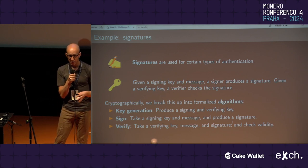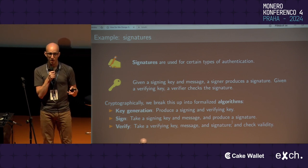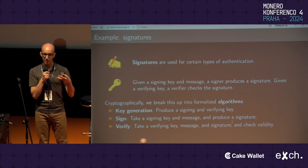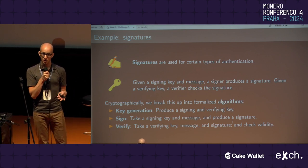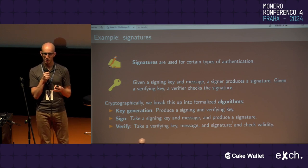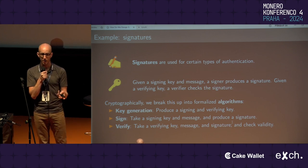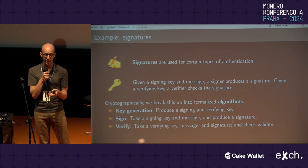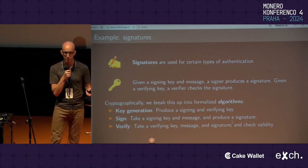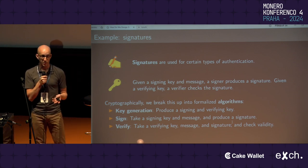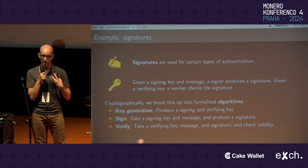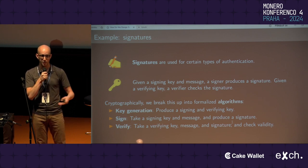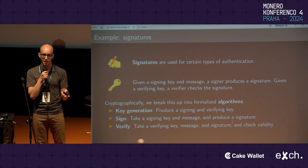To formally analyze the security of any signature scheme, we have to formalize and break it up into different algorithms. Cryptographically, the way we usually do this for the signature example is with three different algorithms. The first is to generate the signing and verifying key in a key generation algorithm. What these algorithms look like depends specifically on what signature construction you're looking at.